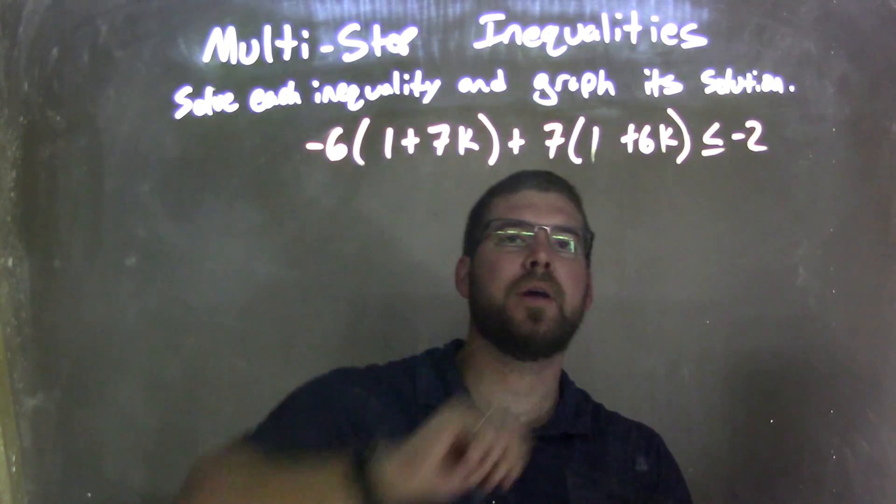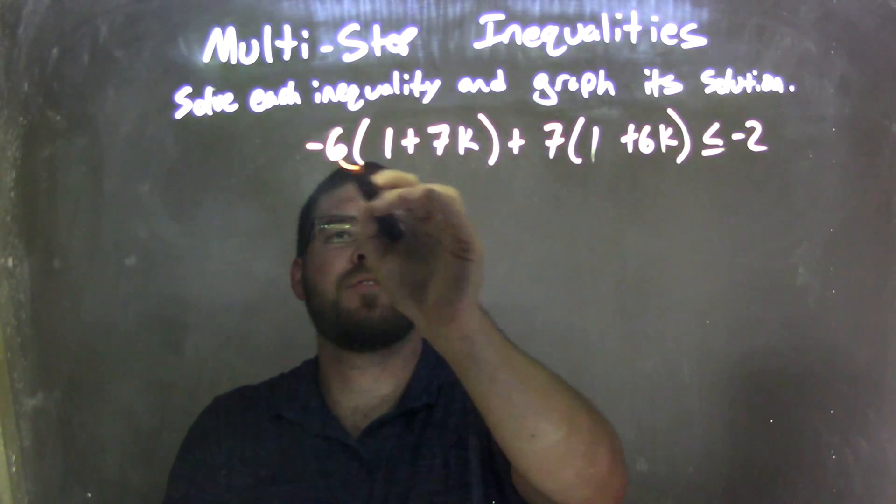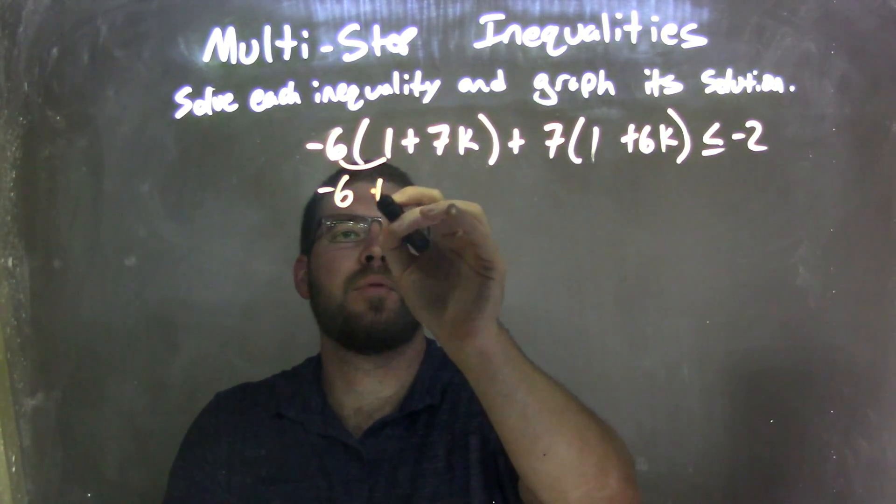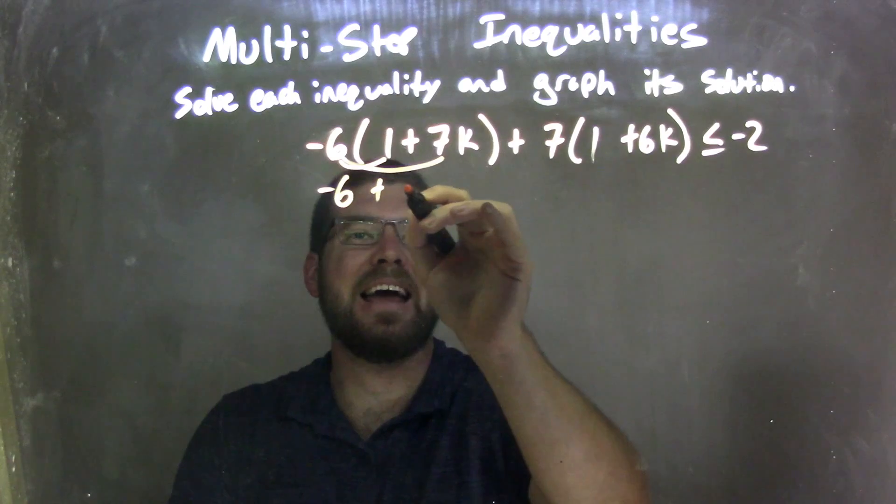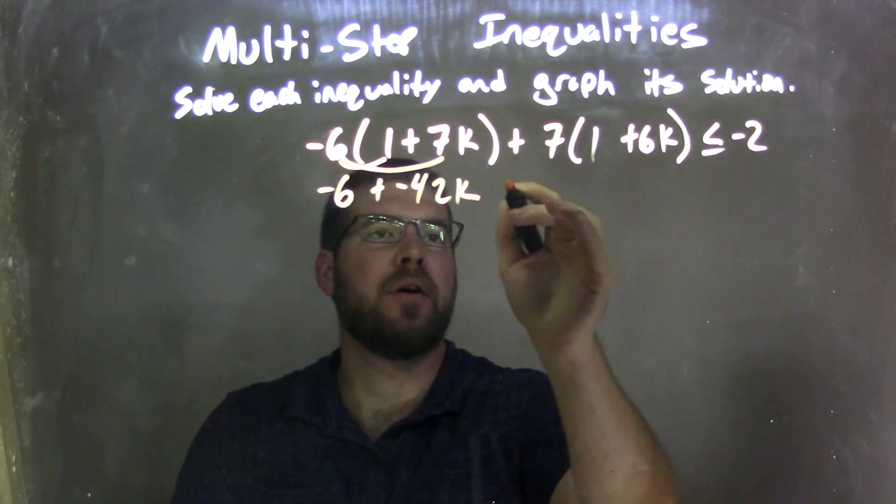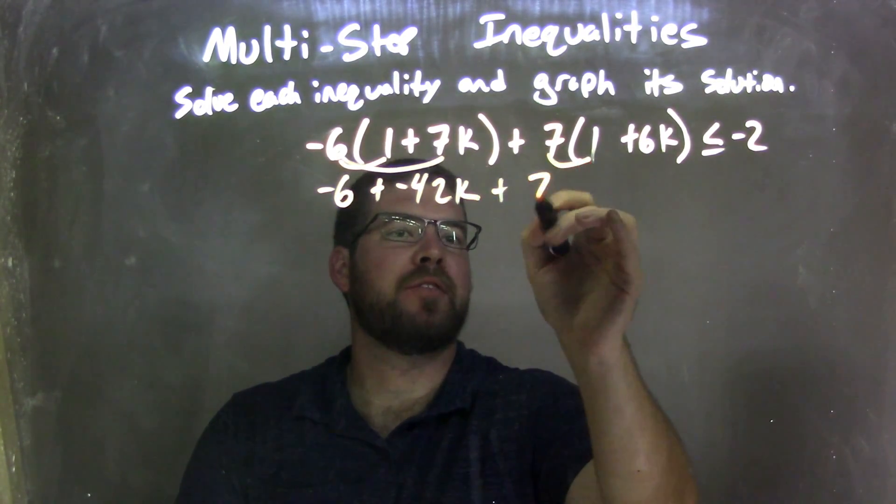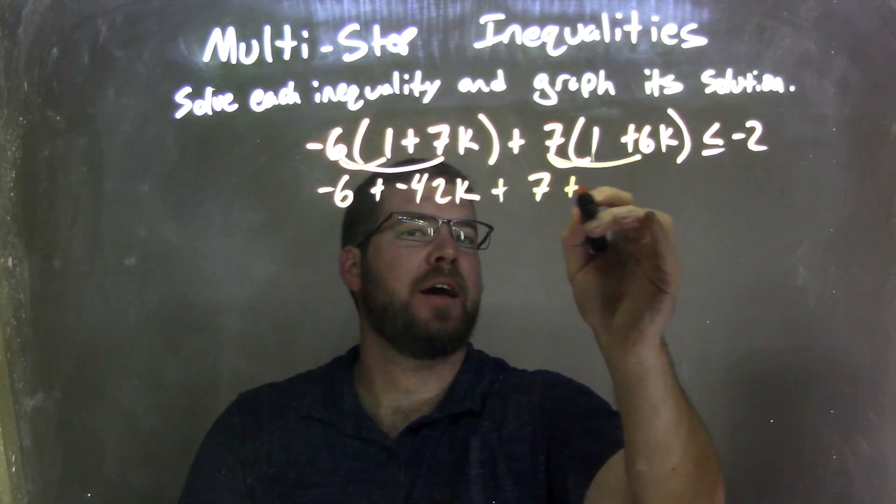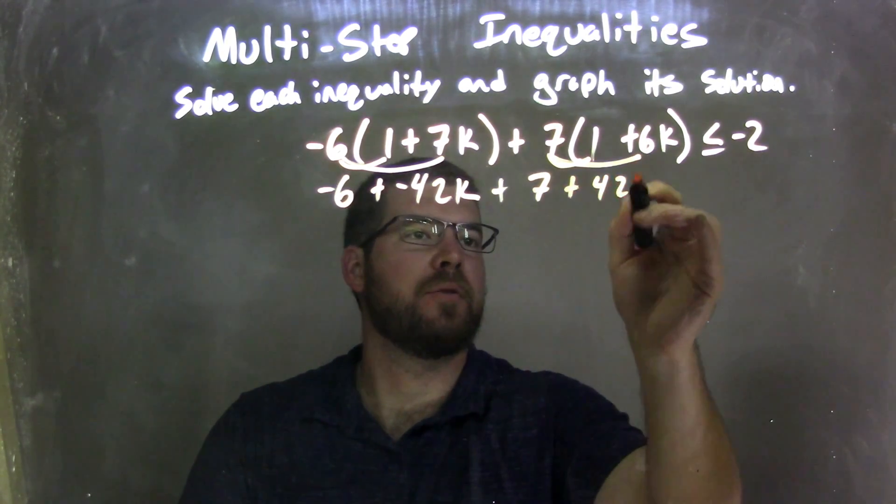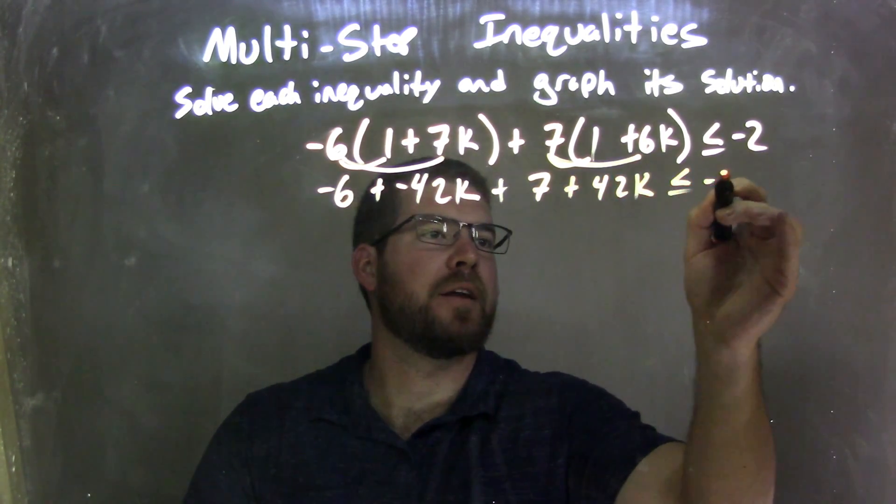Let's distribute each one of these parentheses out. Negative 6 times 1 is negative 6, plus negative 6 times 7k is negative 42k, plus 7 times 1 is 7, 7 times 6k is positive 42k, and that's less than or equal to negative 2.